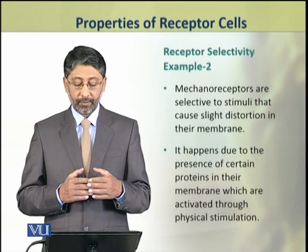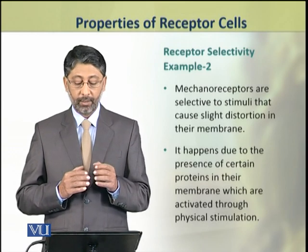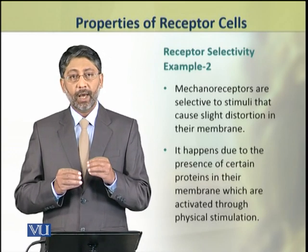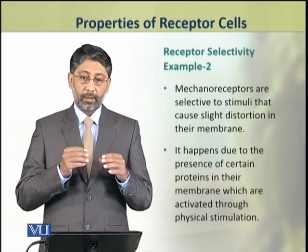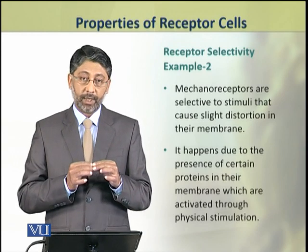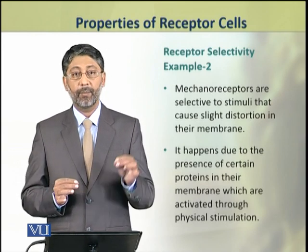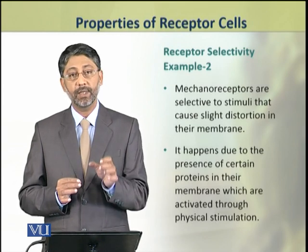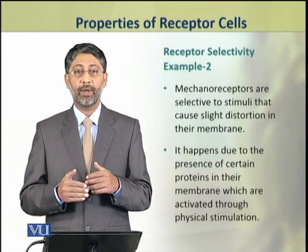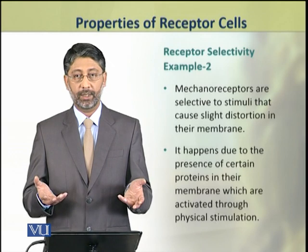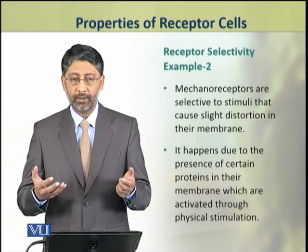In the second example, mechanoreceptors are selective for those stimuli which cause slight distortion in the membrane. Aysa is wajah se hota hai ki in ke paas joh special proteins hain, they are activated by physical stimulation. Yeh jab in ko physical stimulation milti hai, stretch milti hai, ya pressure milti hai, ya vibration milti hai, to as a result yeh proteins active ho jati hai, in ke channels open ho jati hai, aur ionic currents flow kerti hai, aur signals generate ho jati hai.